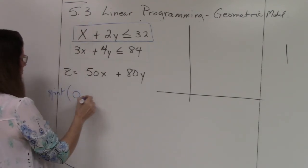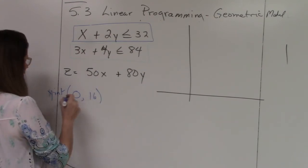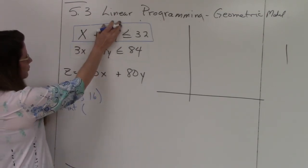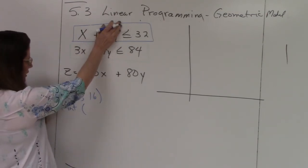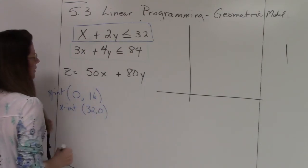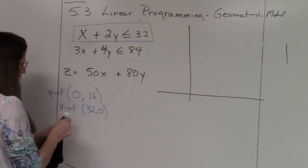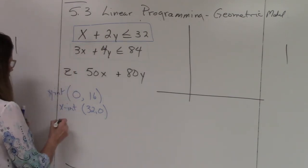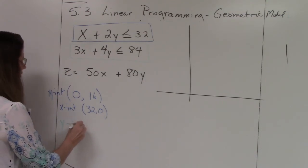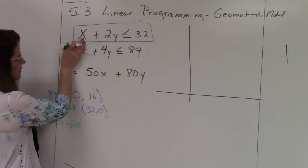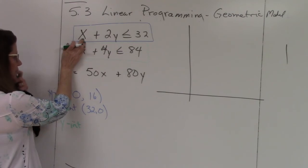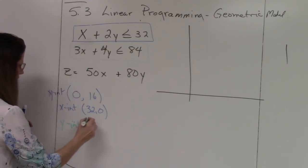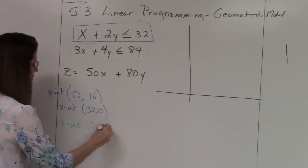Just like in 5.1 and 5.2, we find our intercepts. Our Y intercept, I'm going to cover up the X because X is zero. So 2Y equals 32, so Y equals 16. When X is zero, Y is 16. To find our X intercept, we cover up the Y, and X equals 32.